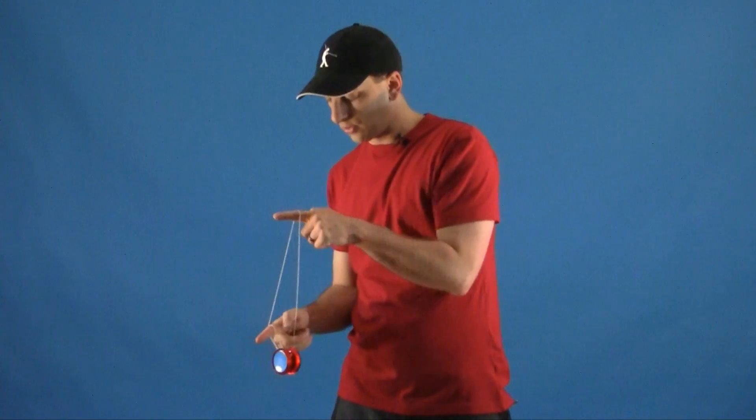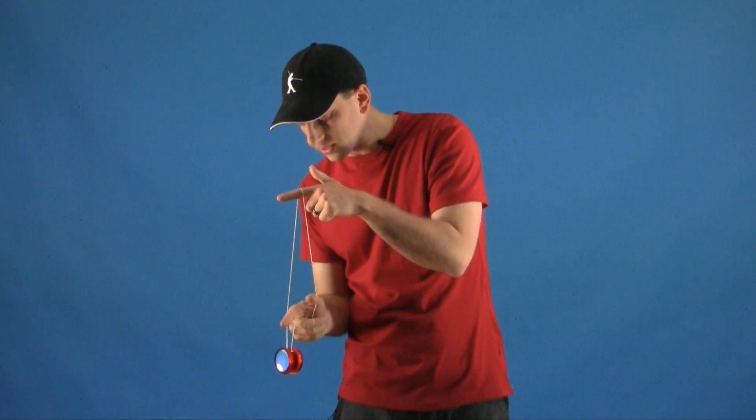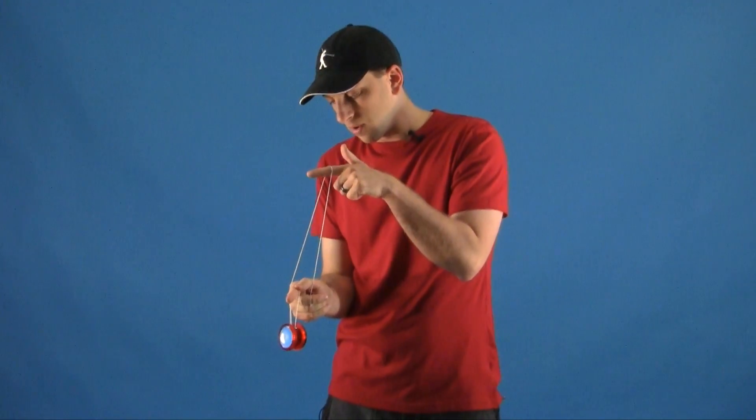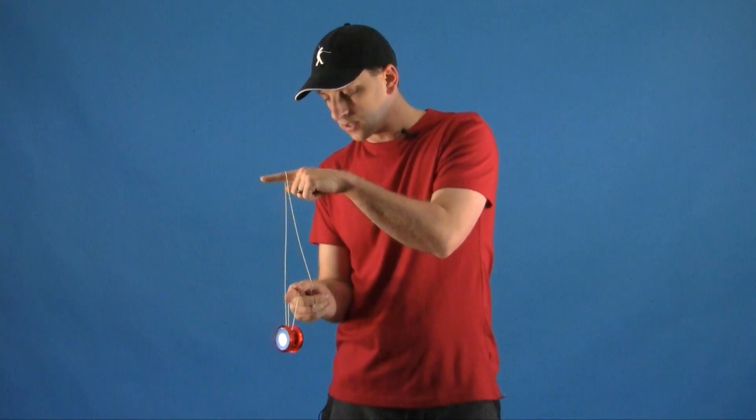It starts off with your one and a half mount. Where you get the slack is you're going to pinch the string between your first finger and your thumb right here, and then this will allow all the string to hang free.